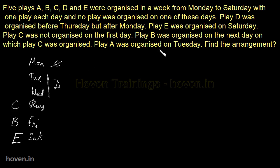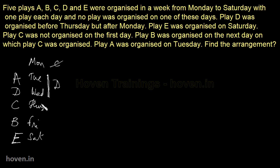Play A was organized on Tuesday — this is also very concretely given. So A is coming on Tuesday. And obviously D, since it has to be on Tuesday or Wednesday, D will fall on Wednesday. Now A, B, C, D and E are all placed, so Monday is the no-play day on which no play was organized.